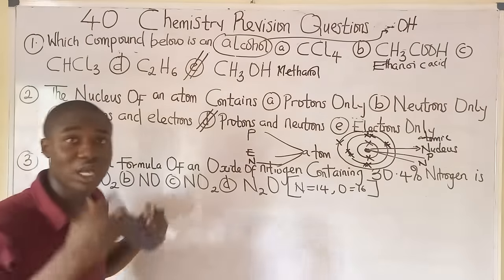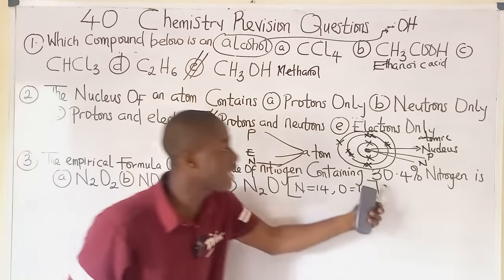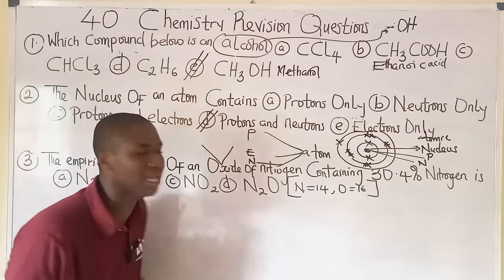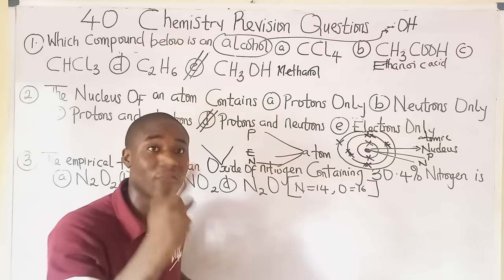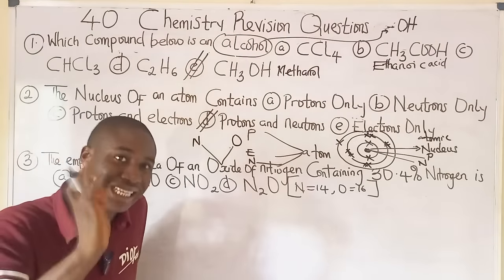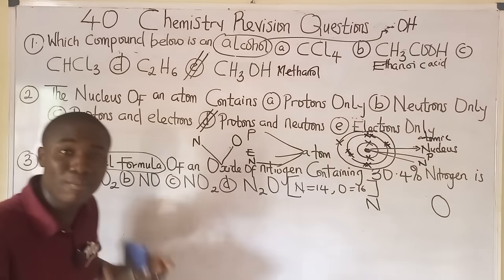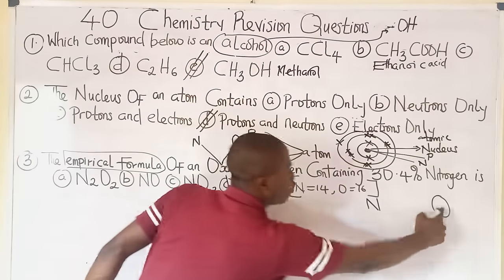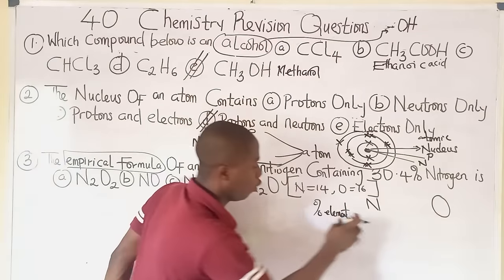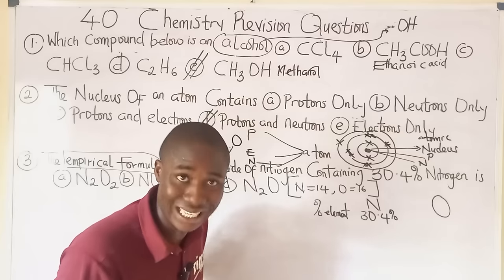Question three: the empirical formula of an oxide of nitrogen containing 30.4% nitrogen. Since it is an oxide of nitrogen, the compound contains two elements: nitrogen and oxygen. The percentage of nitrogen is 30.4%, and since percentages must sum to 100, the percentage of oxygen is 100% − 30.4% = 69.6%.